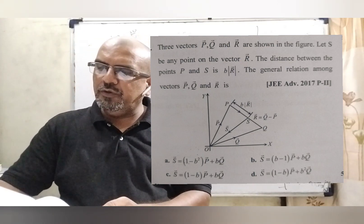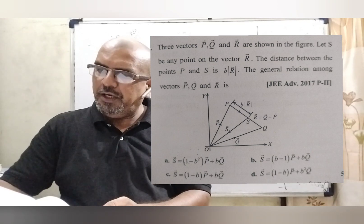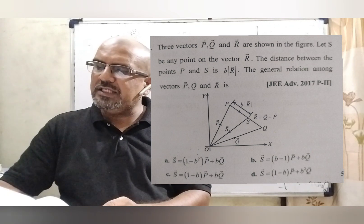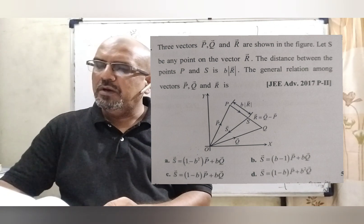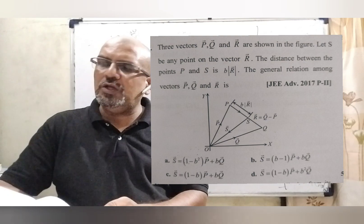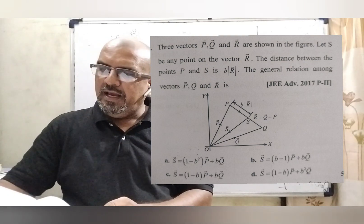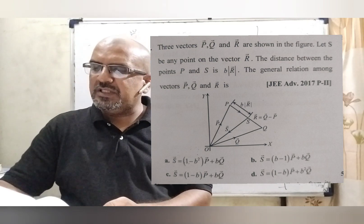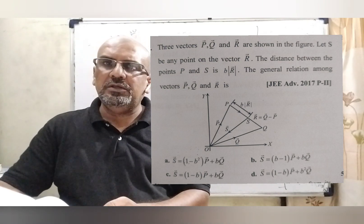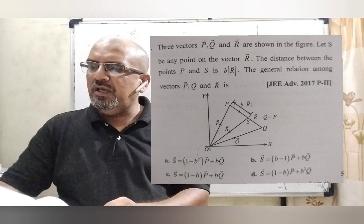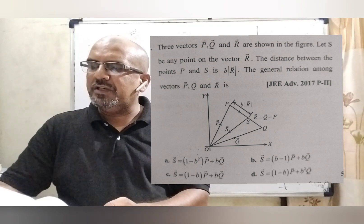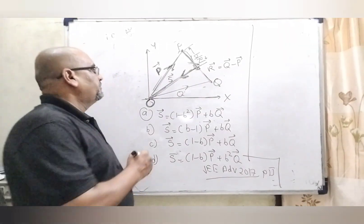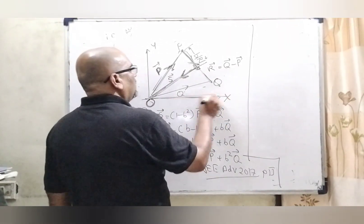Option A: S vector equals (1 minus B squared) into P vector plus B into Q vector. Option B: S vector equals (B minus 1) into P vector plus B into Q vector. Option C: S vector equals (1 minus B) into P vector plus B into Q vector. Option D: S vector equals (1 minus B) into P vector plus B squared into Q vector.